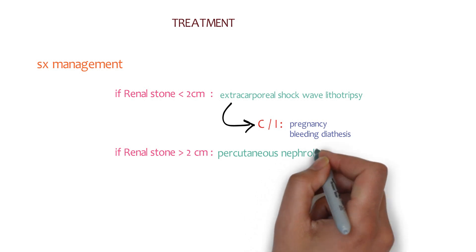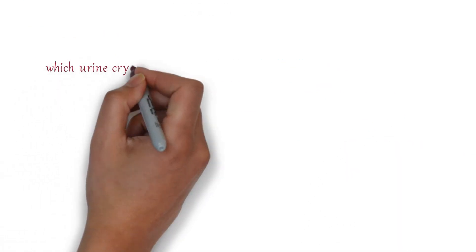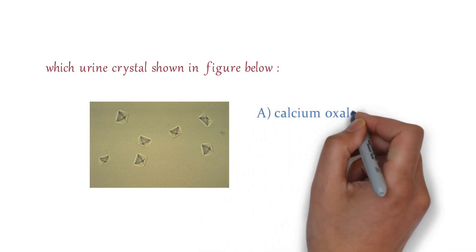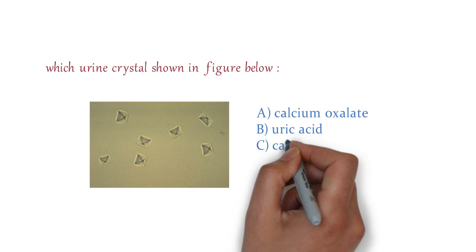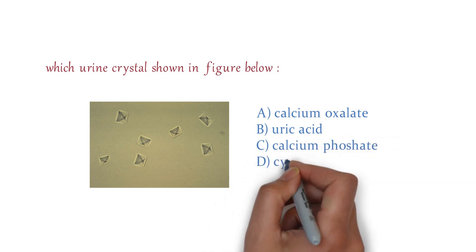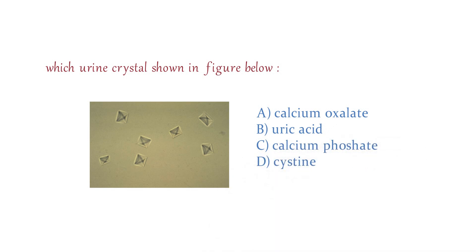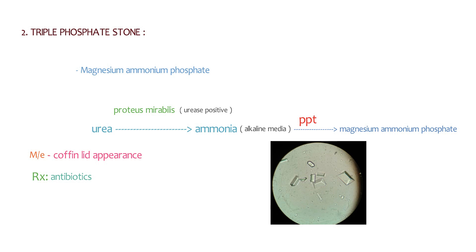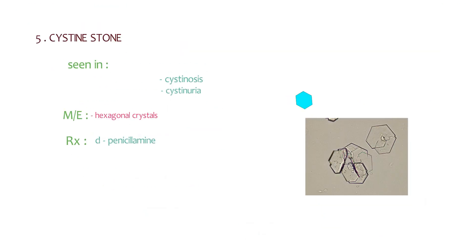Before we end this lecture, I would like to ask a question: which urine crystals are shown in the figure below? Take a look at it. The options are calcium oxalate, uric acid, calcium phosphate, or cysteine. Yes, the answer is A, that is calcium oxalate. Don't forget that in triple phosphate there is a coffin lid appearance of the stones.